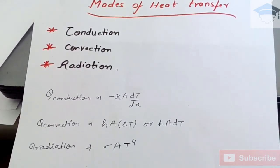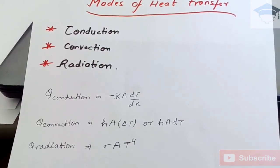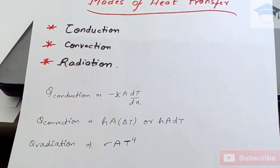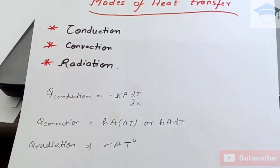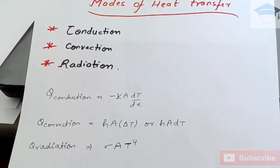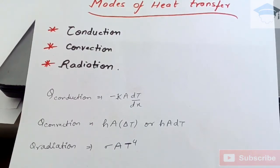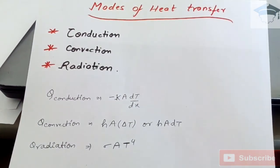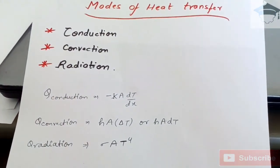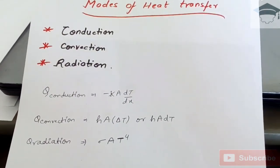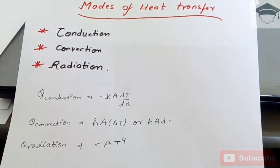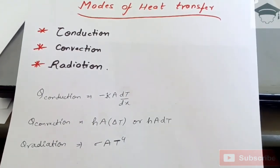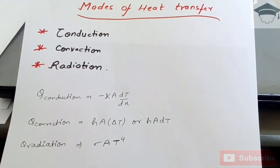Now second mechanism is called as convection. Convection basically is a part of... convection basically constitutes of conduction and one more is called advection. Now convection is the sum of conduction and advection.